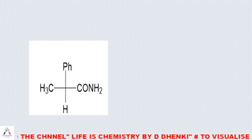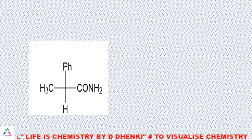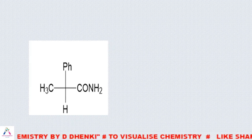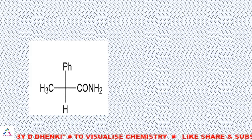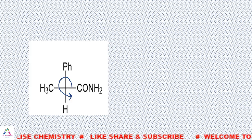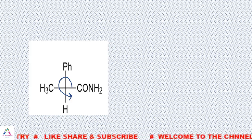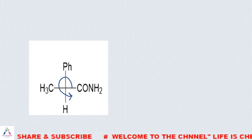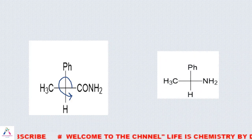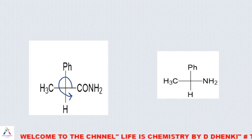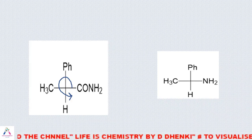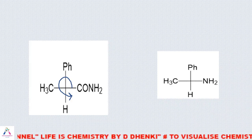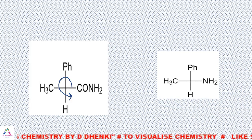The intramolecular nature of the rearrangement can also be proved by another approach. An optically active amide compound with S-configuration undergoes Hofmann rearrangement. After the reaction, the amine product retains the same S-configuration, because the chiral group is never completely detached. Therefore, the rearrangement step is intramolecular and concerted, and retention of configuration is observed in the product amine.